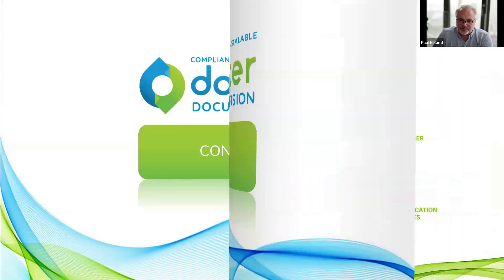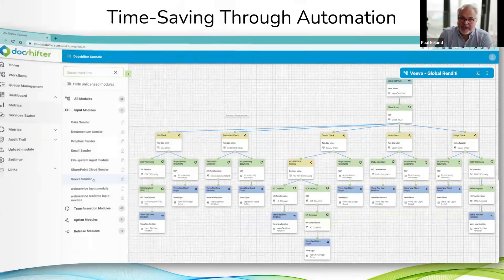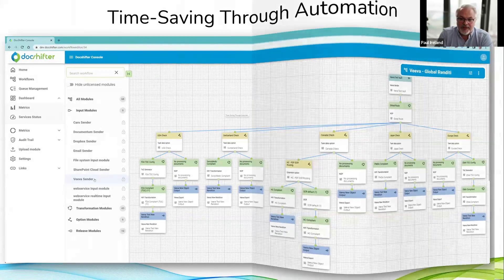Really, a lot of what we do is aimed at reducing risk, streamlining your process, and accelerating content preparation by automating many of them. A lot of these capabilities aid the goal of simultaneous global submissions. What we always aim to achieve is content compliance earlier — not having to wait until publishing time before getting a final PDF that will be shared with the health authority. We allow you to achieve that level of compliance much earlier, so you can identify issues earlier in your process, with the whole aim being to reduce risk.